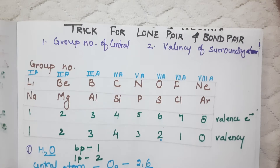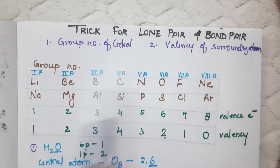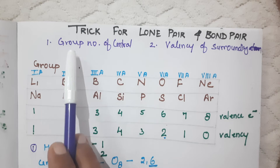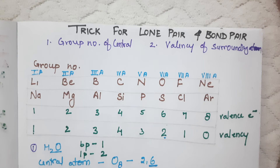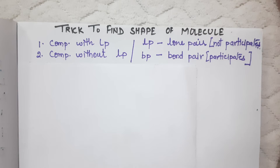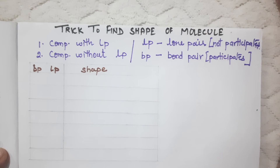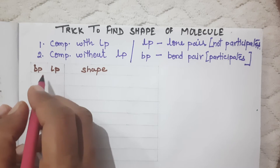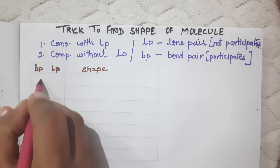In our last video we understood the trick to find the lone pair and bond pair. We used the group number of the central atom and the valency of the surrounding atom. Using that same trick we will calculate lone pair and bond pair, and from those numbers we can determine the shape of any molecule.